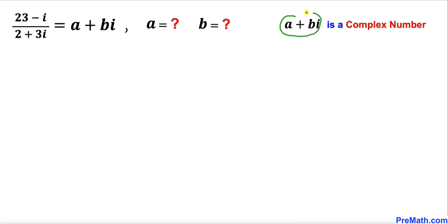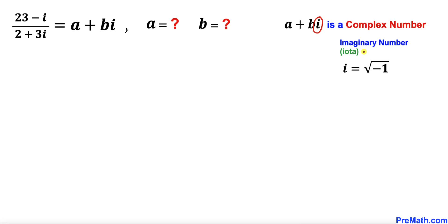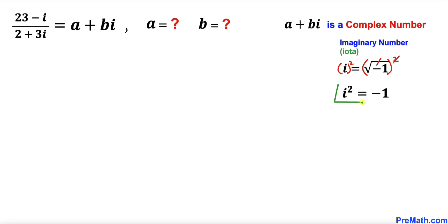Here a plus bi is a complex number where i is called an imaginary number, or sometimes we call it iota. i is always equal to the square root of negative 1, and if we square both sides of this equation, the square and square root undo each other, so i squared is always equal to negative 1.